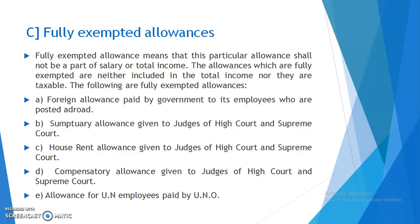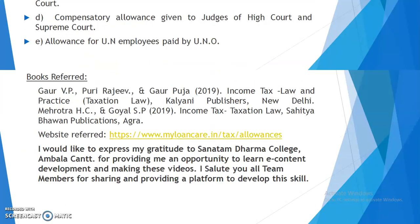Number one, foreign allowance paid by the government to its employees who are posted abroad. Number two, sumptuary allowance given to judges of the High Court and Supreme Court. Number three, house rent allowance given to judges of the High Court and Supreme Court. Number five, allowance for UN employees paid by UNO.